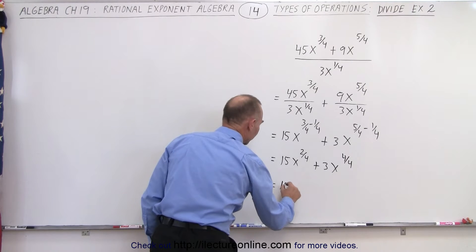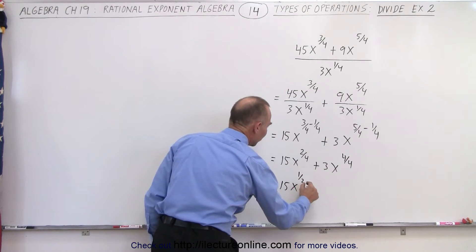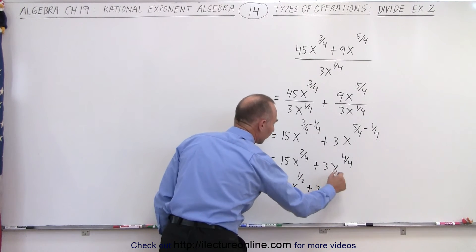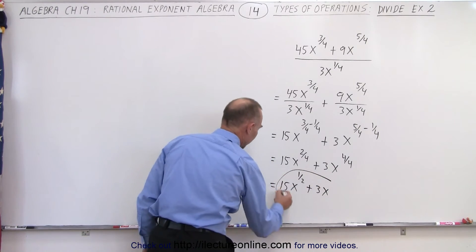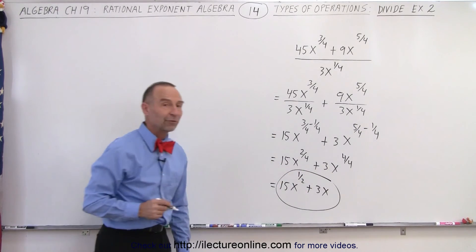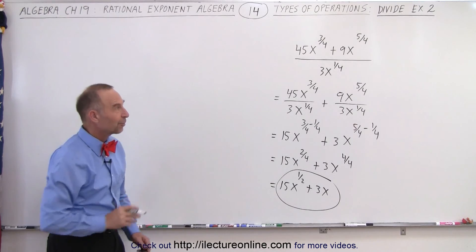This can then be written as 15x to the 1 half plus 3x to the first power. We don't have to write to the first power, and there's the simplified form. That is how it's done.